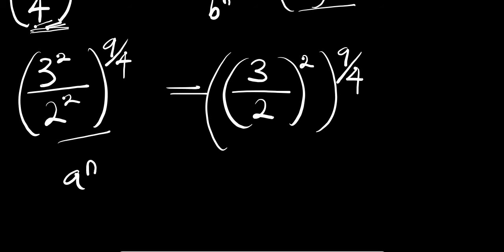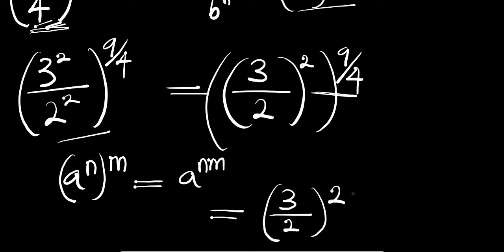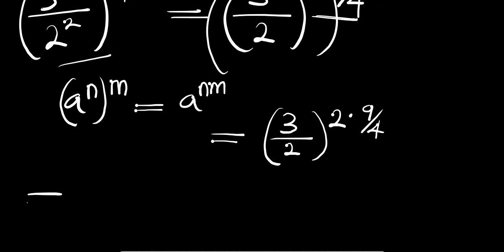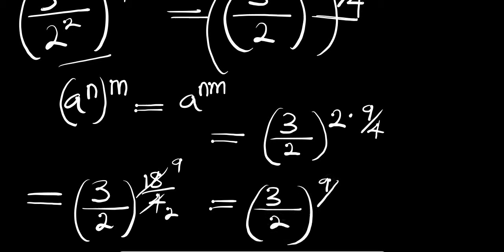If you have a to the power of n, all to the power of m, this equals a to the power of n times m. So we are simply going to multiply these exponents and we are going to have 3 divided by 2, all to the power of 2 times 9 divided by 4. This gives us 3 divided by 2 all to the power of 18 divided by 4. From here 2 can cancel into 4 twice, and 18 divides to 9, so this gives us 3 divided by 2 all to the power of 9 divided by 2.